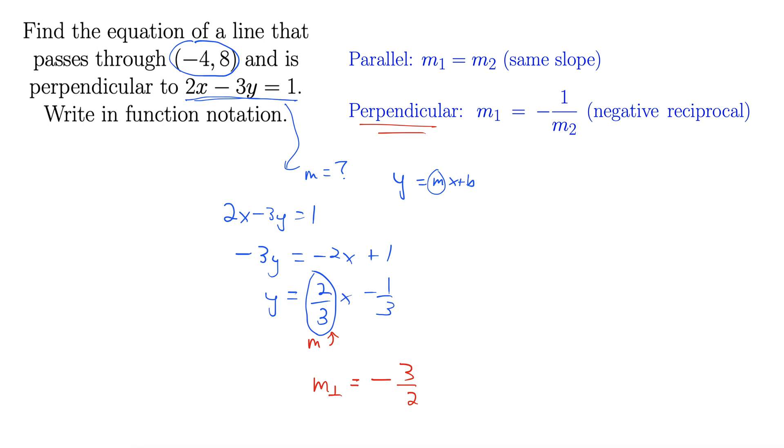So now we have our slope, we have our point. Here's our point, negative 4 and 8. So this is x1, the 8 is y1. Let's bring up our equation for point-slope form. That's the useful equation when we have a point and the slope. y minus y1 equals m times x minus x1.